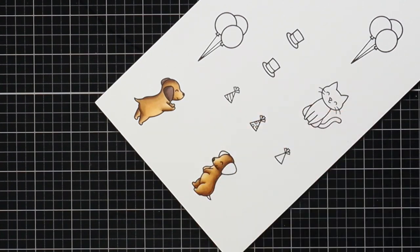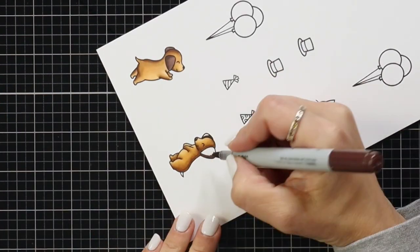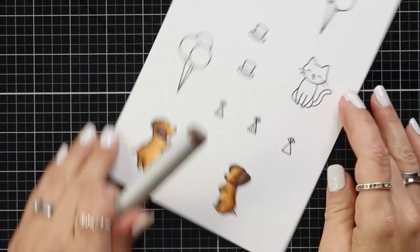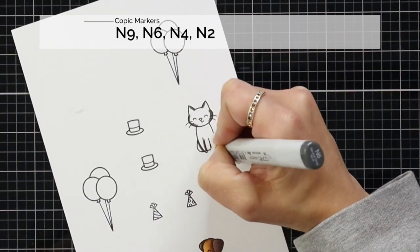So for the cat I will be using neutral grays which is going to be N9, N6, N4, and N2.